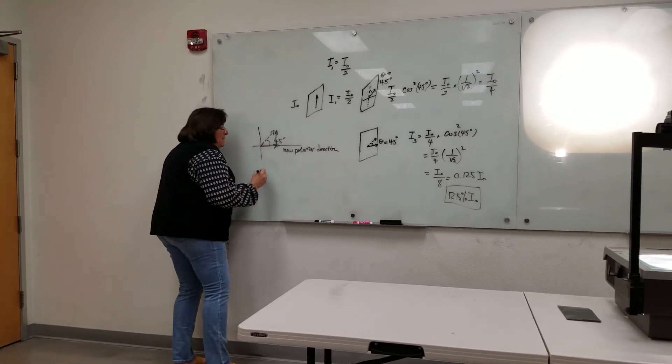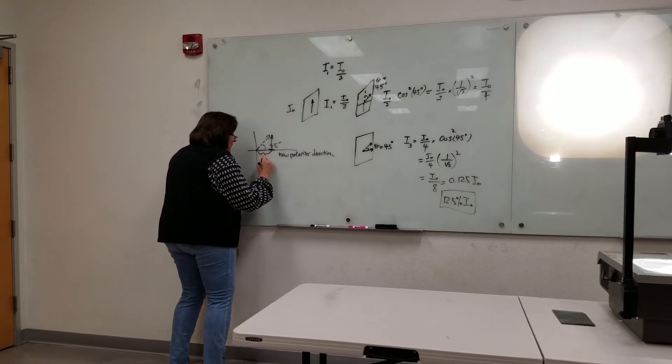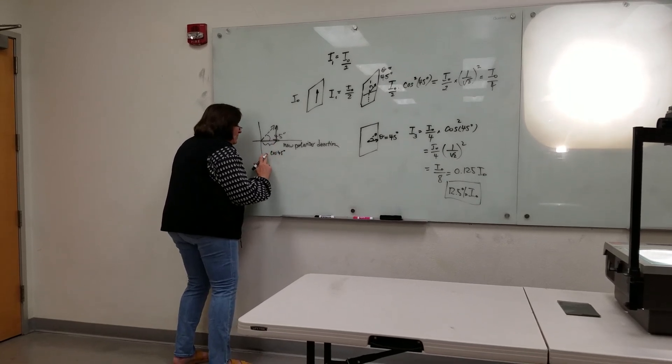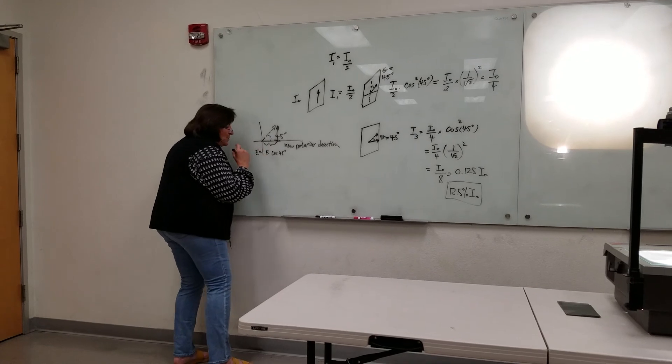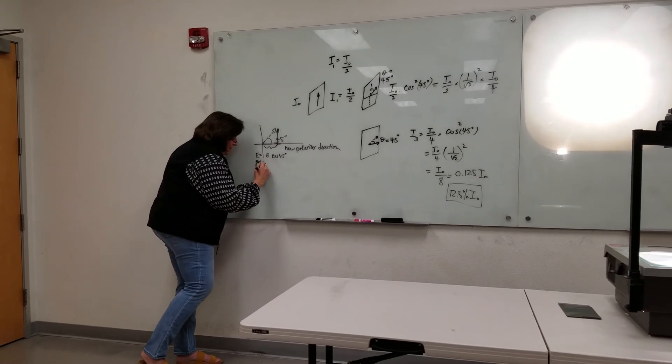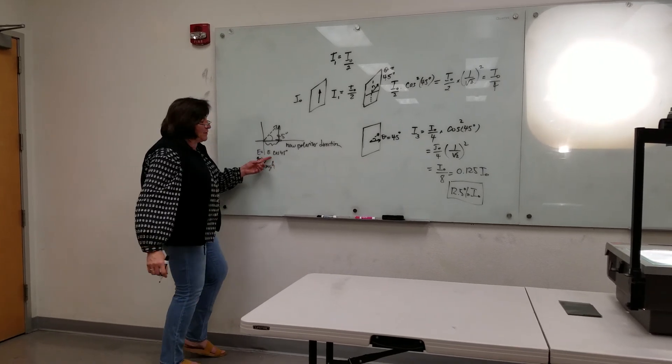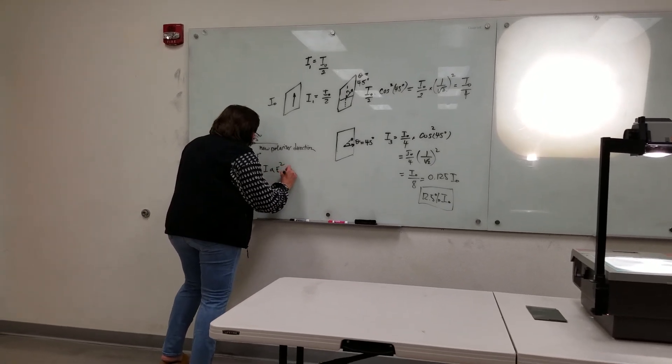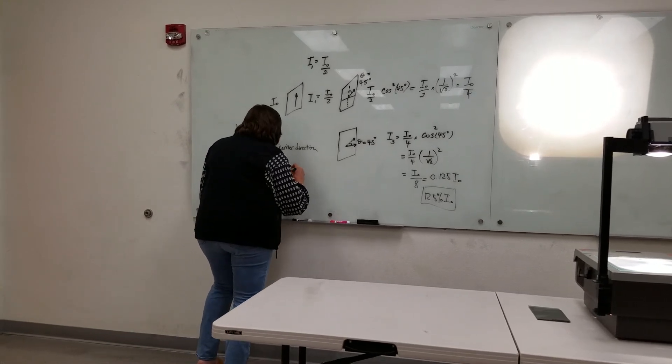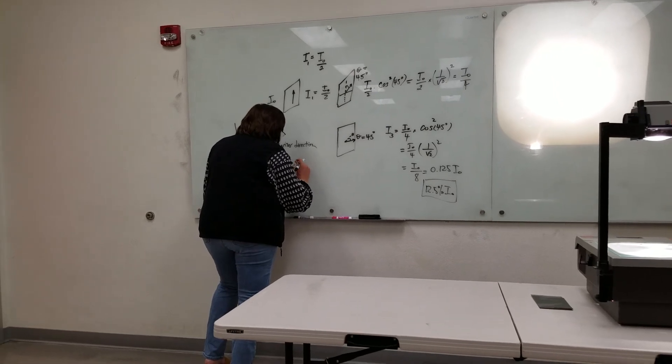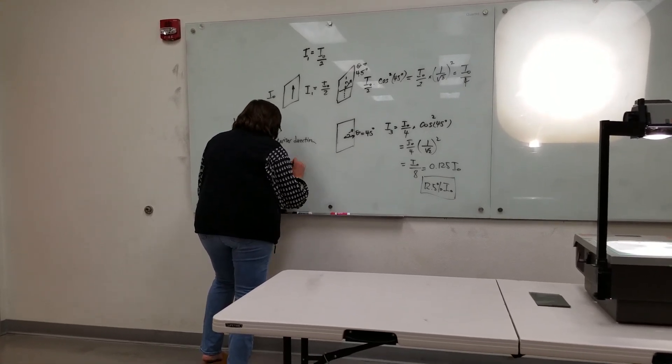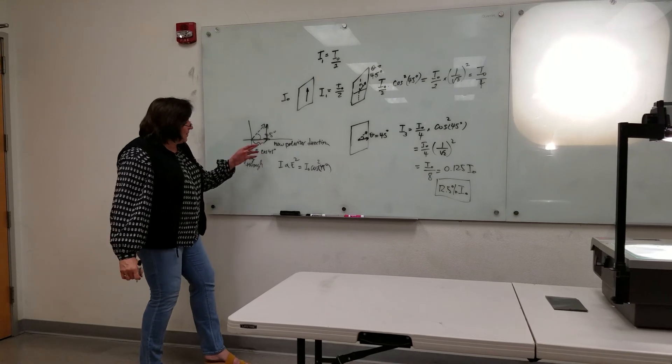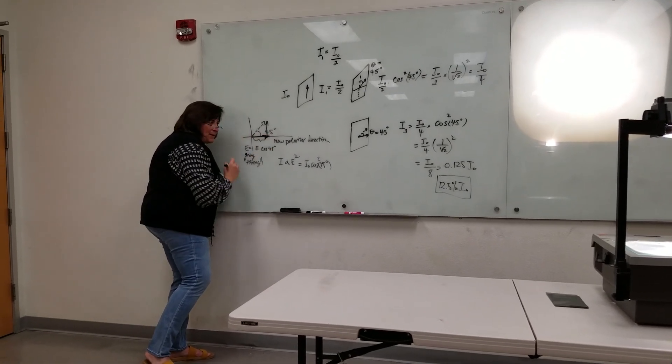So this size of this vector is the amount of light before times cosine of 45 degrees. Well, the electric field strength that comes through is the electric field strength from what came in times cosine 45. The intensity depends on E squared, what comes through squared. So it's E squared. So it's I naught cosine squared 45 degrees. So it's picking off just this amount of light that's polarized in that direction. So there's some light coming through.